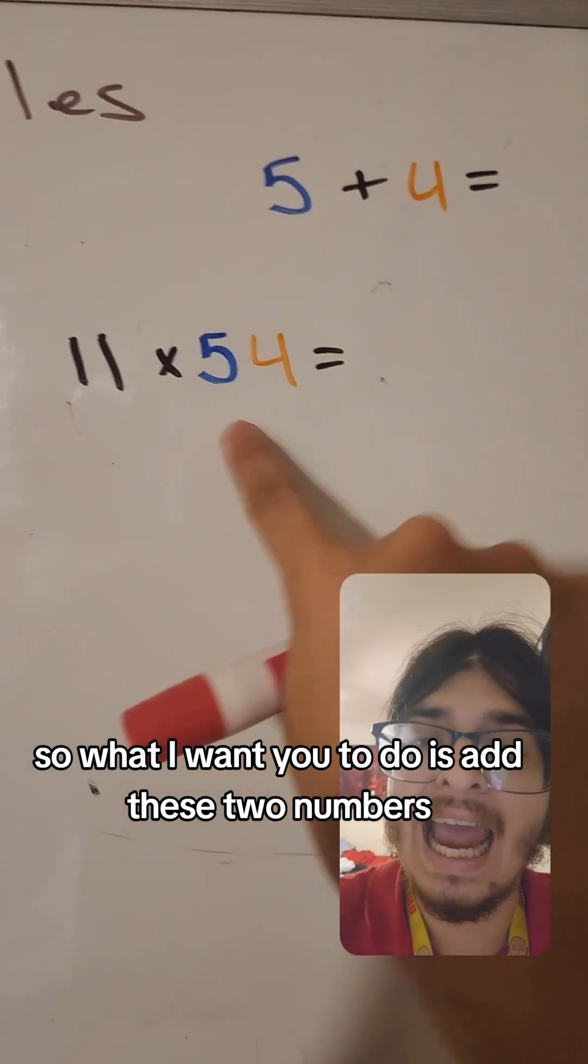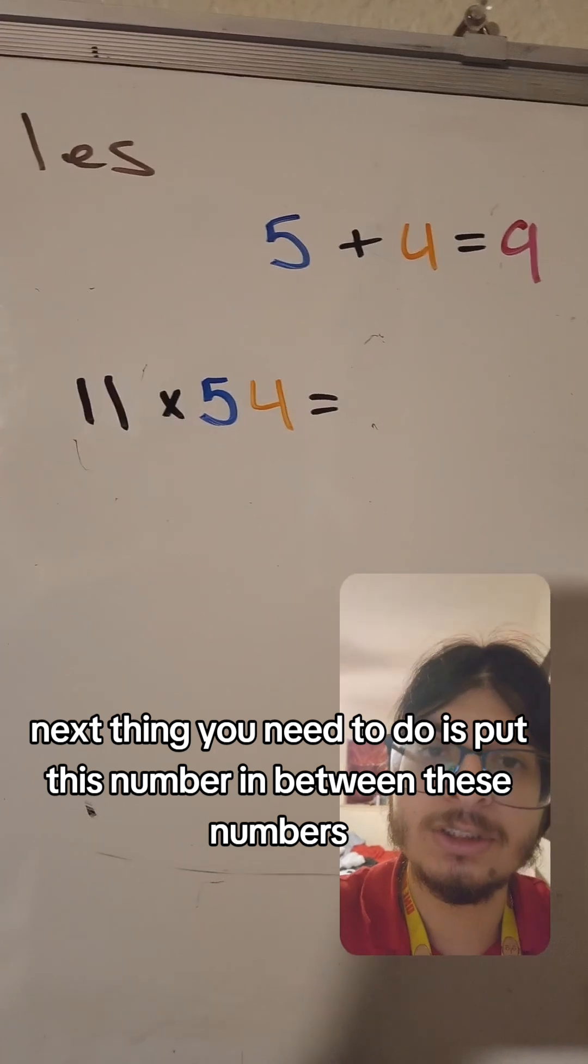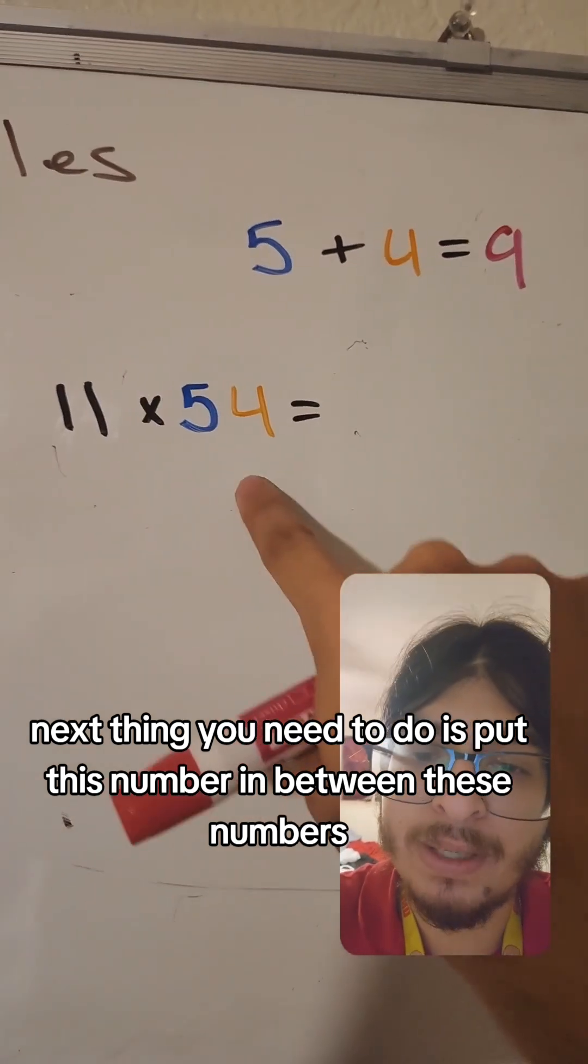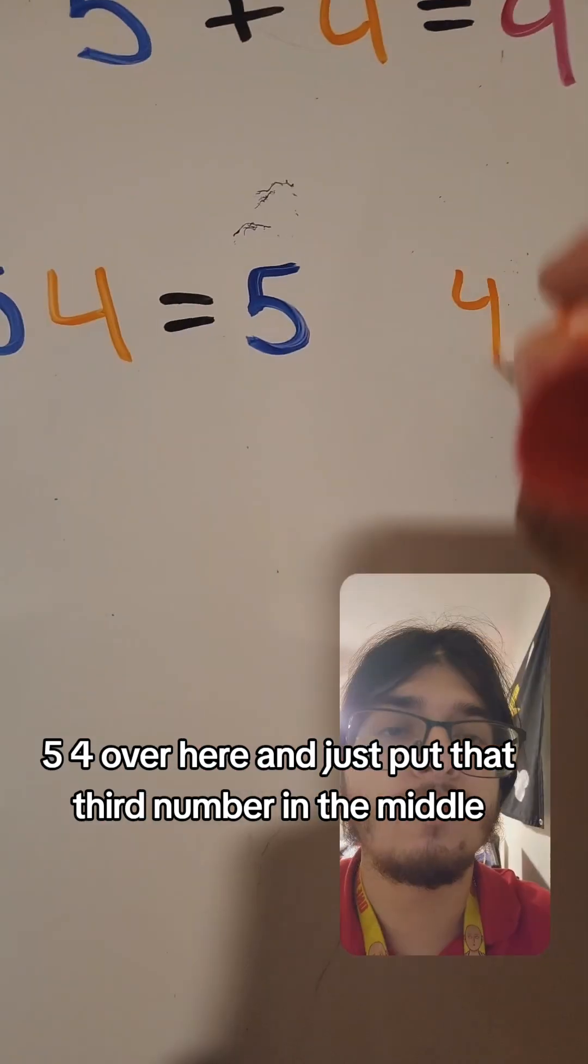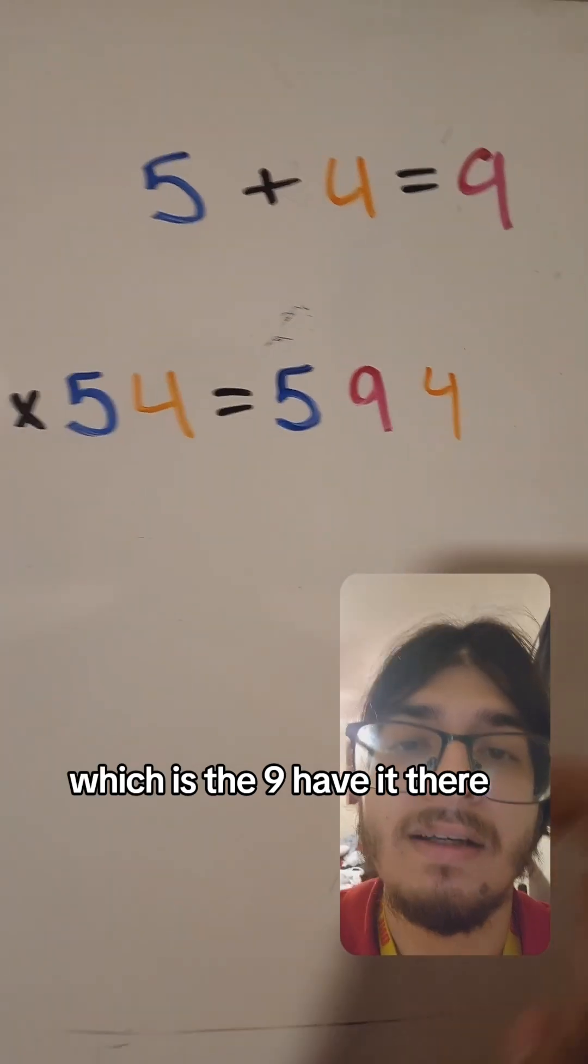So what I want you to do is add these two numbers, 5 plus 4, that is 9. Next thing you need to do is put this number in between these numbers. 5, 4 over here. And just put that third number in the middle, which is the 9.